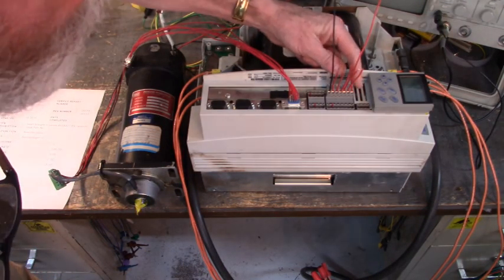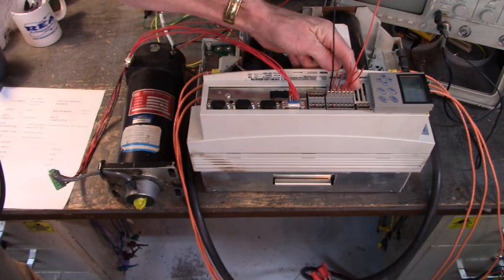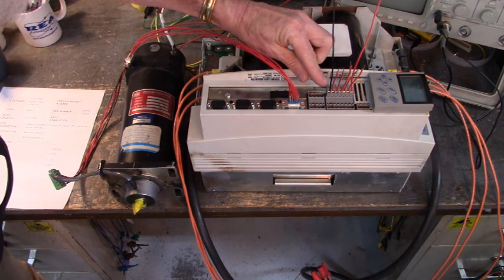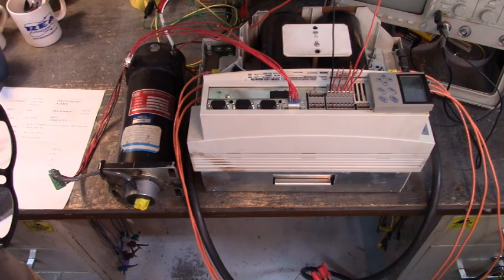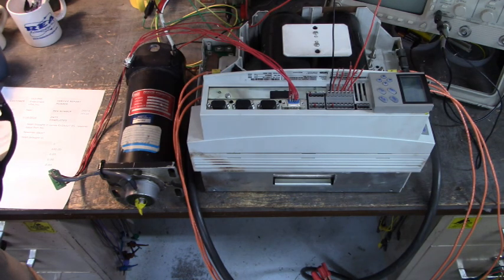Here is terminal 28 where we have plus 24 volts DC. And its ground on terminal 39. I can turn that off right here. Now the output is off.